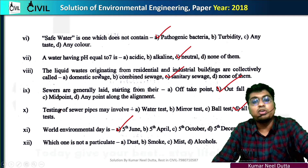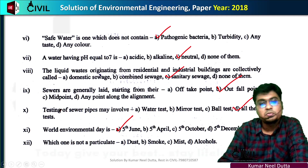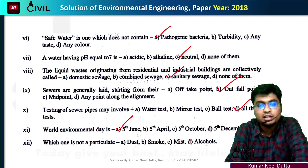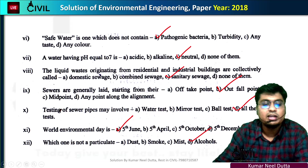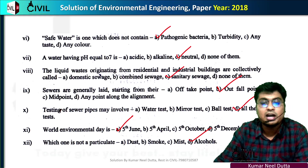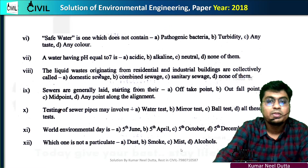Number 12: which one is not a particulate matter? Dust, smoke, and mist are particulate matter. Alcohol is not a particulate matter. So option D will be the correct answer.